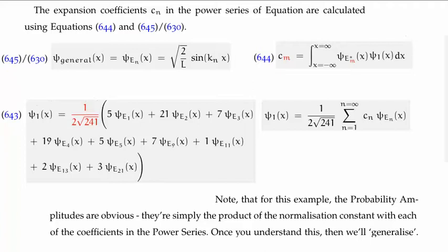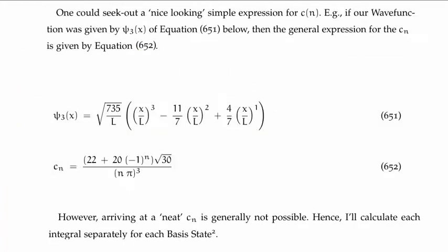Formally, if we wanted to calculate all of the c sub n's, we'd use Fourier's trick, which is given by the integral on the top right of your screen. Generally speaking, you'd like to look for a nice-looking simple expression for your c sub n's — one expression as a function of n. For example, let's take the wave function psi sub three, which is given in the centre of your screen — I've just pulled this out of the sky.